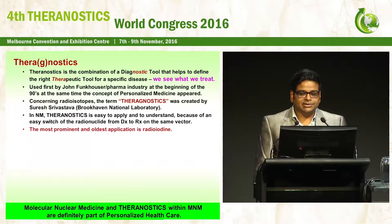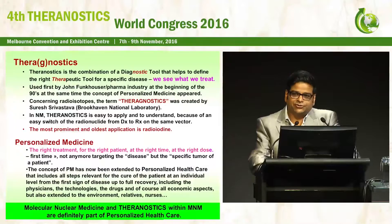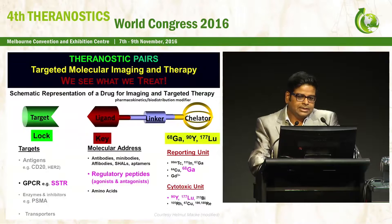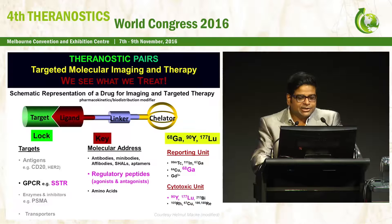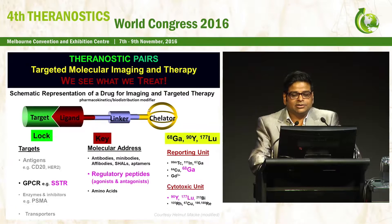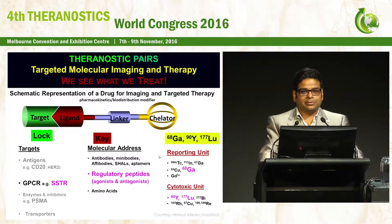This is not a new concept. The most prominent and oldest application is of course radioiodine. The strength is to provide personalized healthcare — the right treatment for the right patient at the right time and at the right dose. Targeted molecular imaging and therapy can be seen as a lock-and-key principle, wherein targets are different antigens or receptors attached with molecular addresses that bind specifically to this key, and depending on which radionuclide is attached, the combination can be used for imaging or therapy.